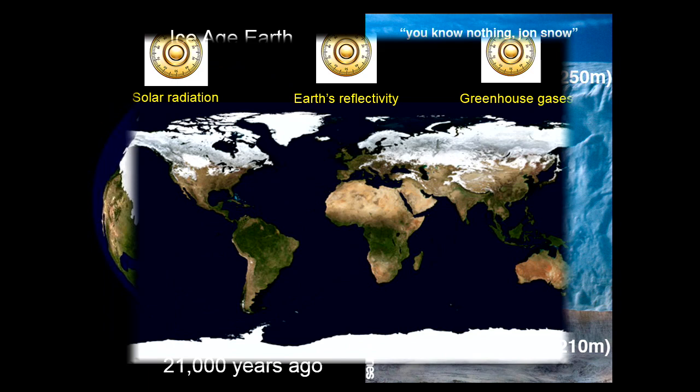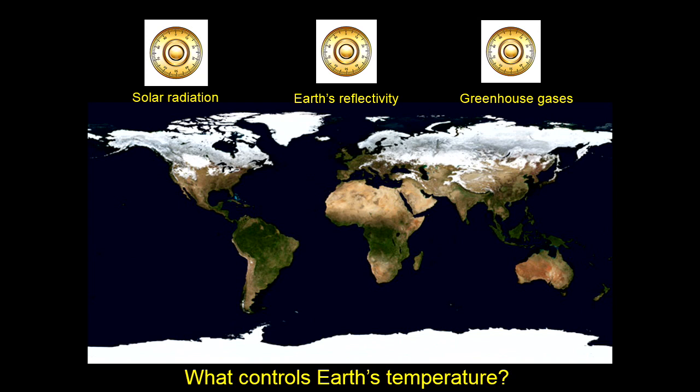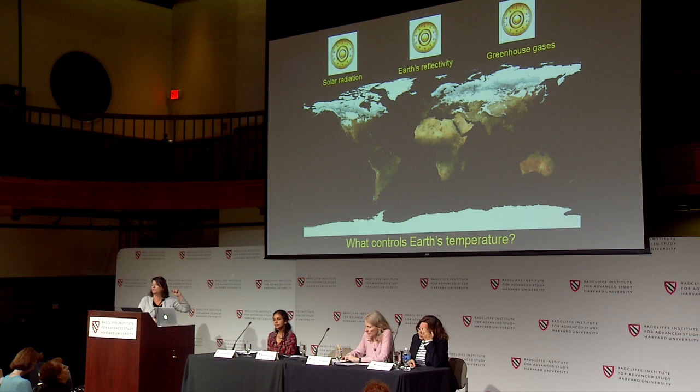Why do these changes happen? The climate system is infinitely complicated, and no scientist can be an expert at every part of it — but at the same time, it's somewhat very simple. You can go to the radiation chapter in a freshman physics book and find a simple equation to calculate the temperature of the Earth. The surface temperature adds just one more variable: the concentration of greenhouse gases.